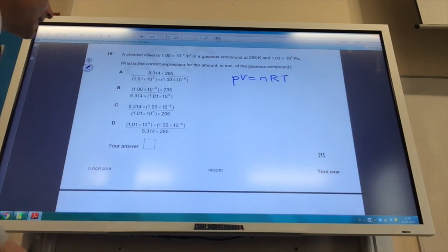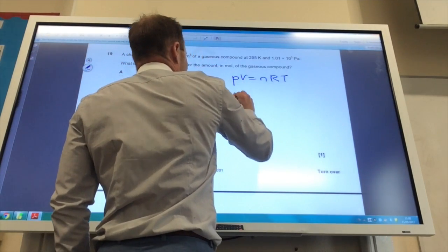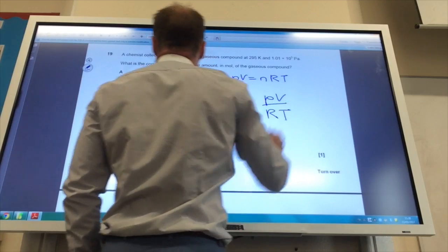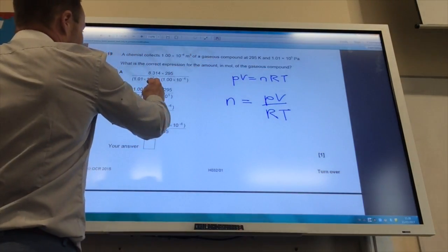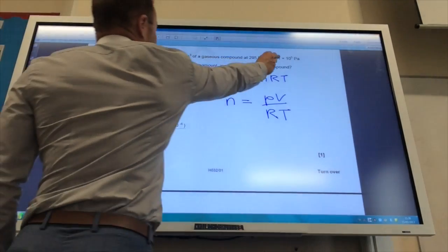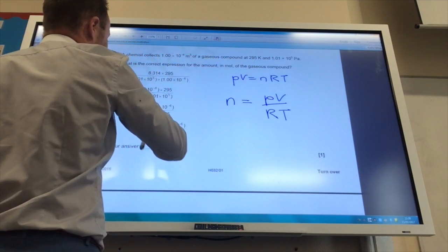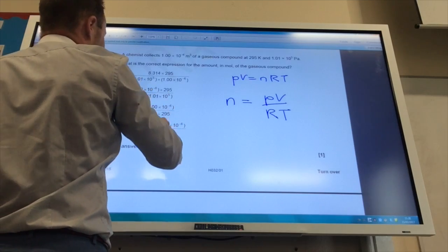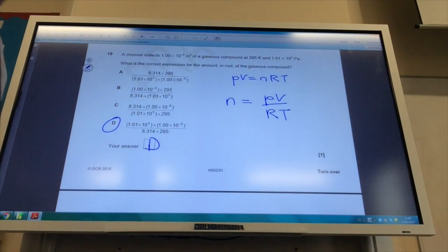Question 19, you need to use the ideal gas equation for this one, and it wants me to find the number of moles. So N equals PV over RT. That is going to be my pressure in pascals, and this is my volume. They give it to me in the right units of pascals and meters cubed. So based on that, divided by R and T, the answer is D.